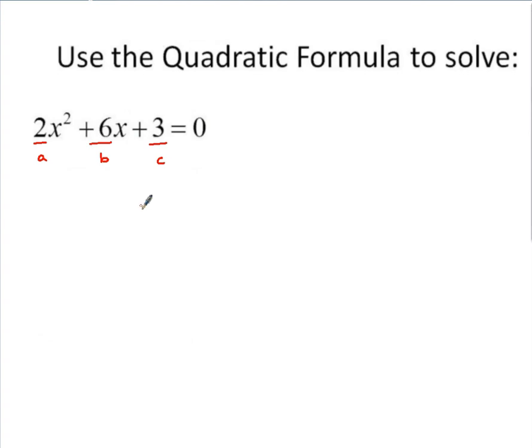Using the quadratic formula, we can figure out what our solutions for x are going to be. So just for good practice here, to get familiar with it, the quadratic formula is x equals negative b plus or minus square root of b squared minus 4ac all over 2a.